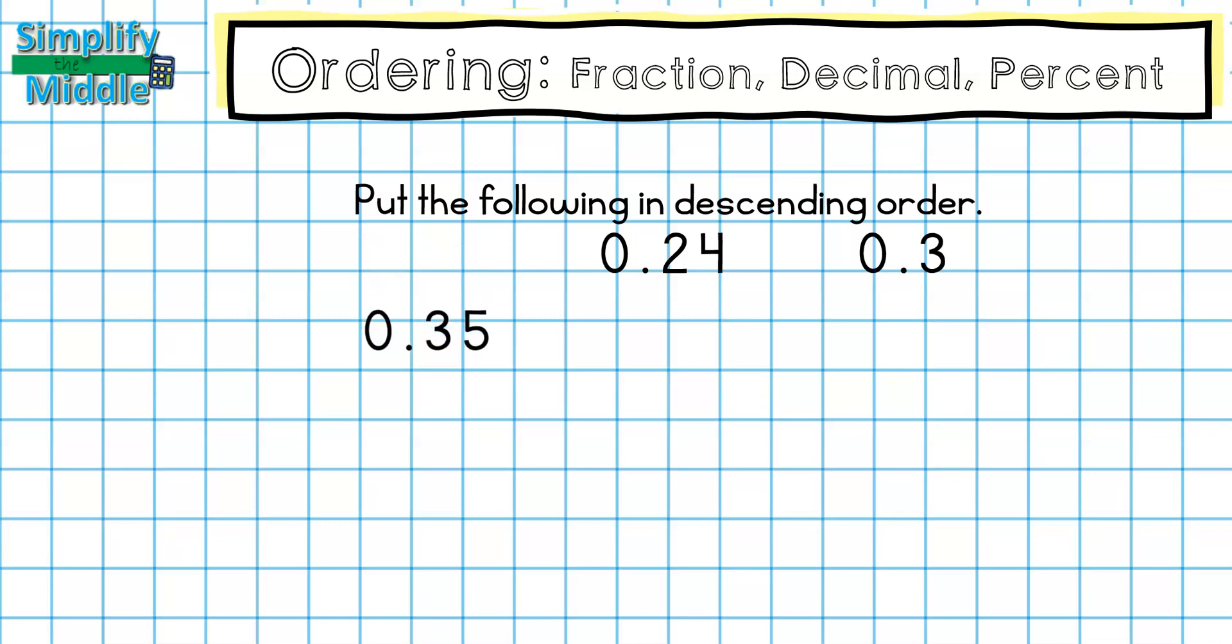We're always going to stack our decimals on top of each other. Graphing paper helps us because it keeps each place value separate. Anytime that you have a number where you're missing a place value, you can always just add the trailing zero.